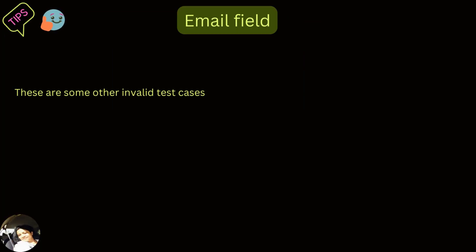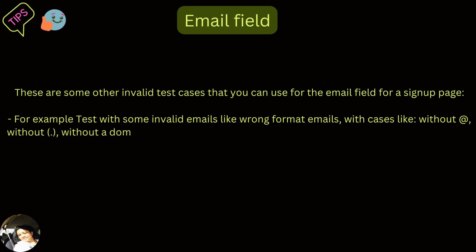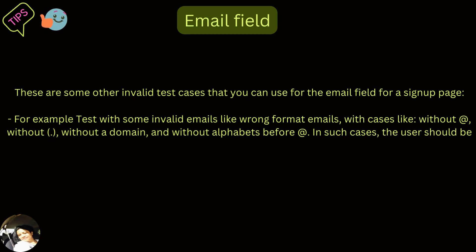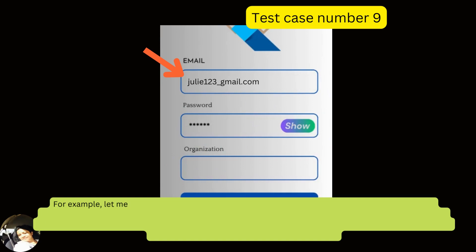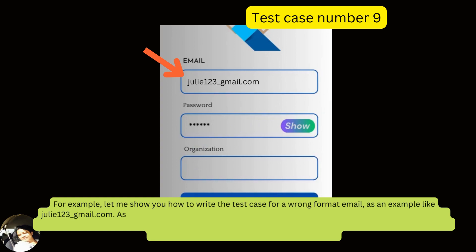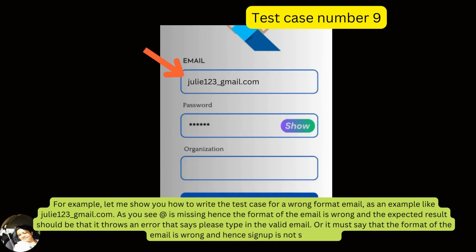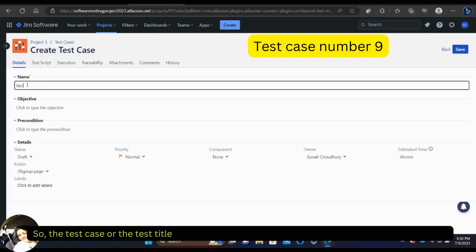These are some invalid test cases for the email field: test with wrong format emails — without the @ symbol, without a dot, without a domain, or without alphabets before the @. The user should be prompted that the email address is invalid and signup should fail. For example, 'julie123_gmail.com' is missing the @ symbol, so the format is wrong. The expected result is an error saying 'Please enter a valid email.' The test title: 'Verify sign up using a wrong format email.'